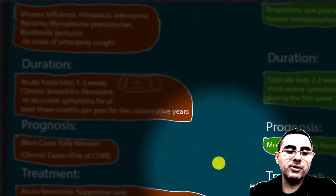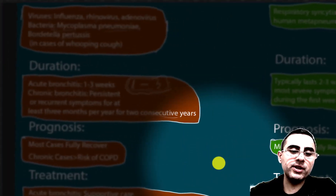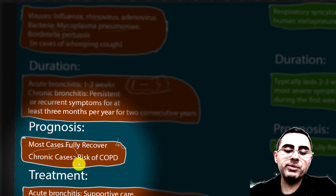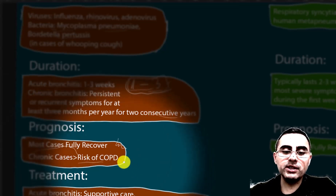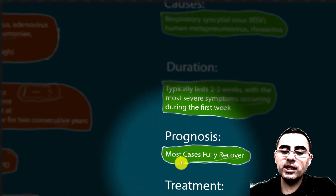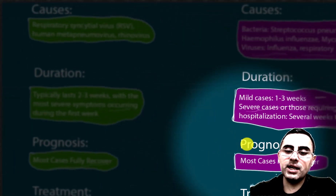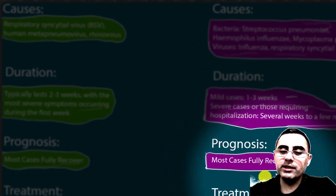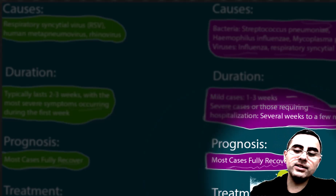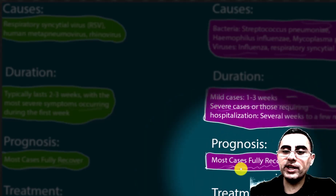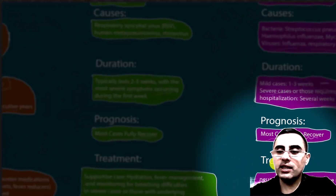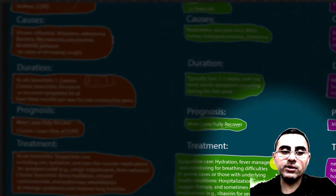Prognosis: most cases of acute bronchitis recover fully, but chronic bronchitis carries risk of developing COPD — chronic obstructive pulmonary disease. Prognosis of bronchiolitis is usually very good with full recovery. Prognosis of pneumonia is also generally good, but in developing countries where people lack access to medical services and antibiotics, there are many deaths from lower respiratory infections.